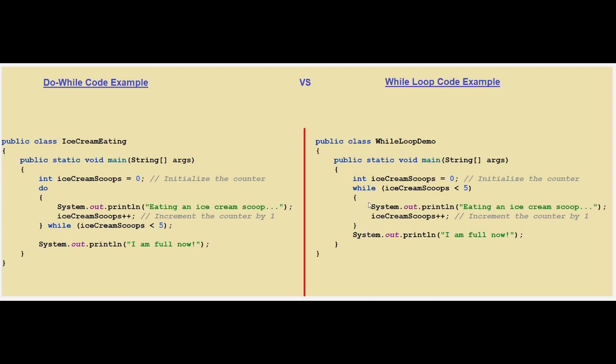The crucial difference between these loops is that the while loop checks the condition before executing the code inside, whereas the do-while loop executes the code first and then checks the condition. That's why in a do-while loop, the code inside is guaranteed to run at least once, even if the condition is false initially.